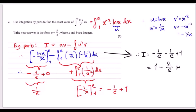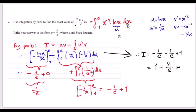Question two: use integration by parts to find the exact value of the integral of ln(x)/x² from 1 to e. To make life easier, rewrite x² on the baseline as x to the negative 2, bringing it up. Now because we're using integration by parts, we need to choose a suitable u.